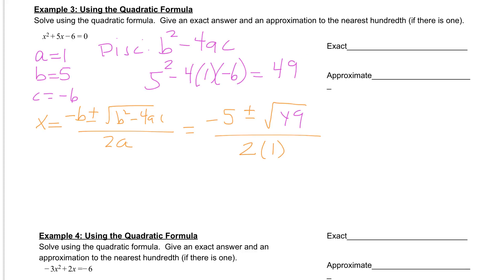Thinking about our discriminant here, our discriminant 49 is a perfect square. So we should get two positive answers, and they should be nice rational numbers. So let's continue to solve. We get negative 5 plus or minus. The square root of 49 is 7. All divided by 2.